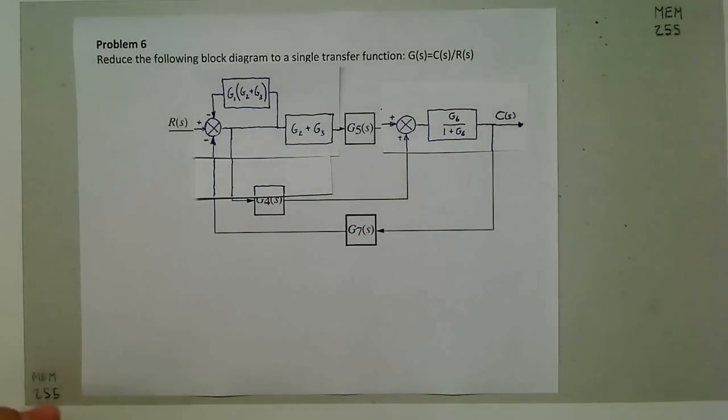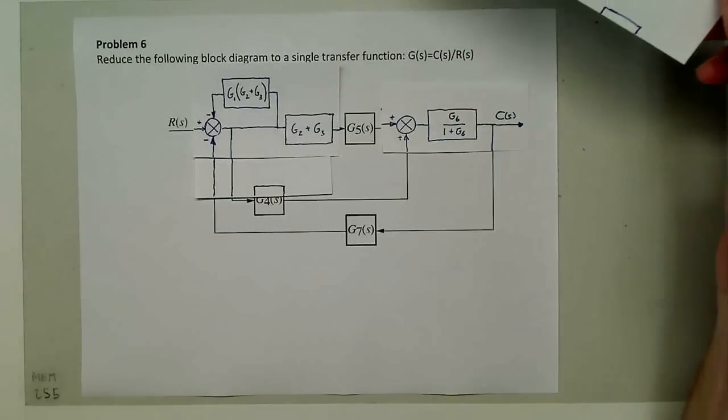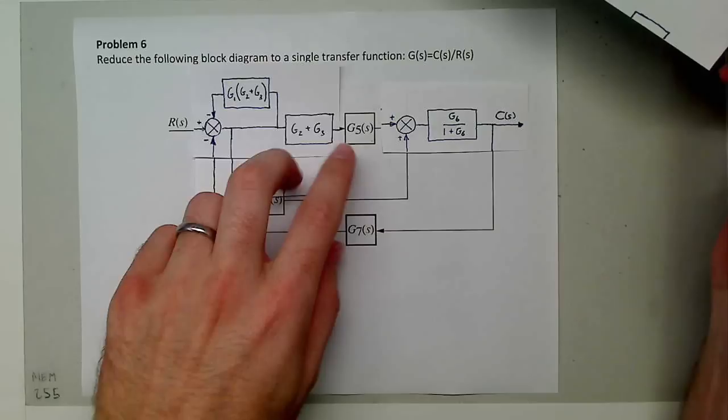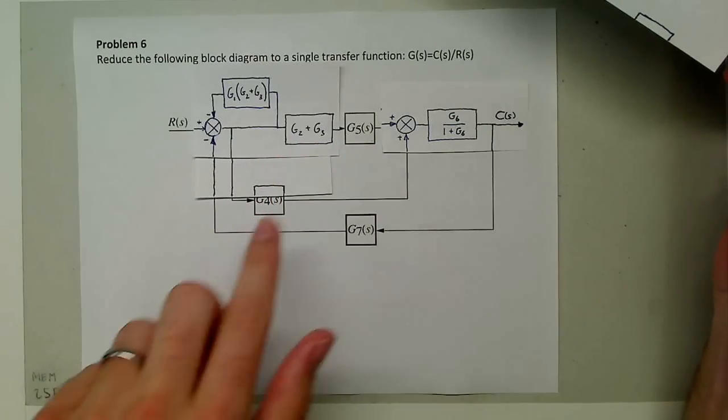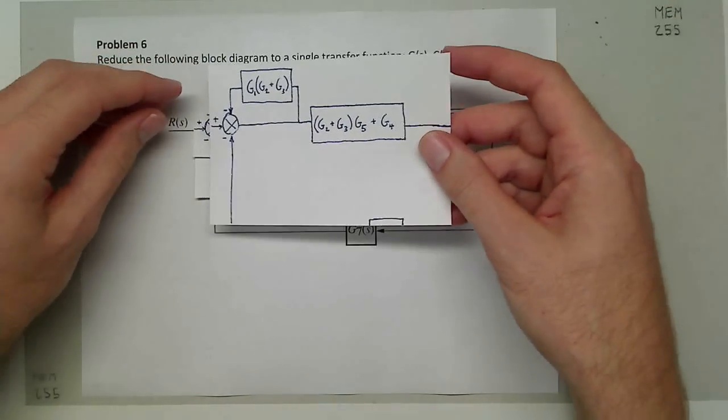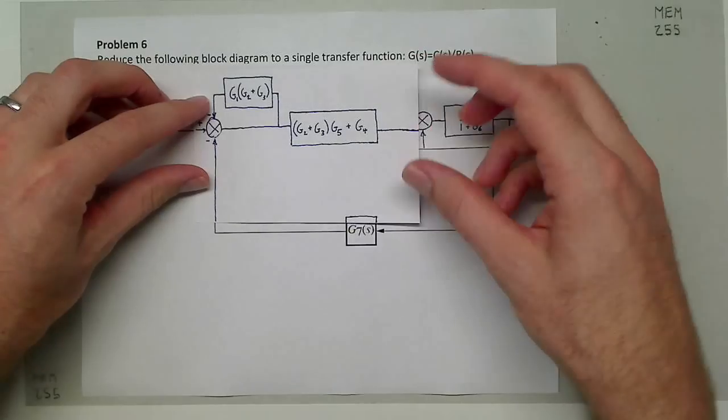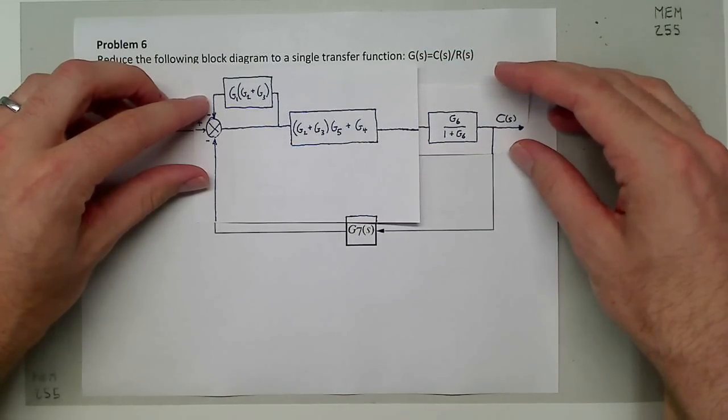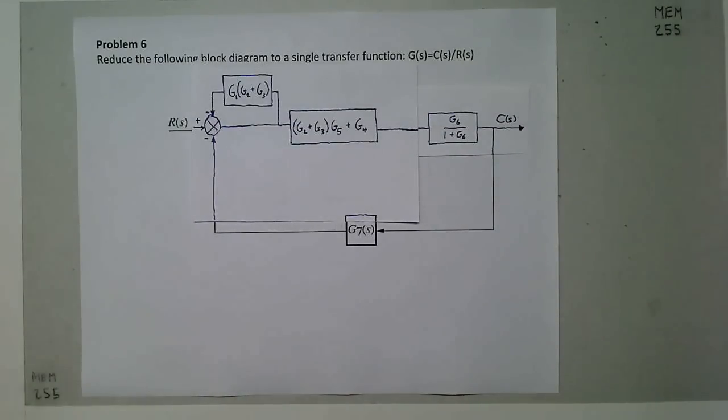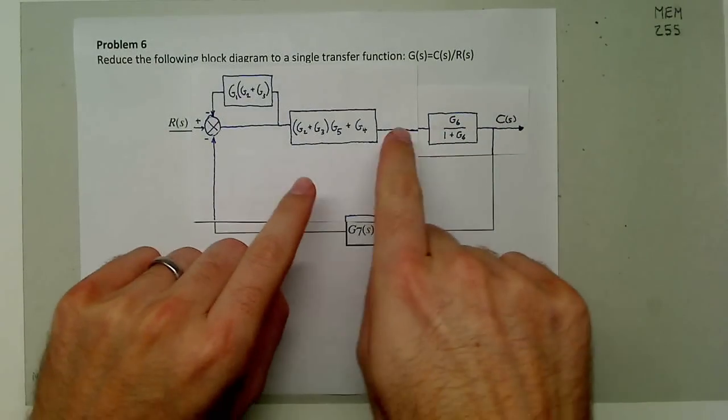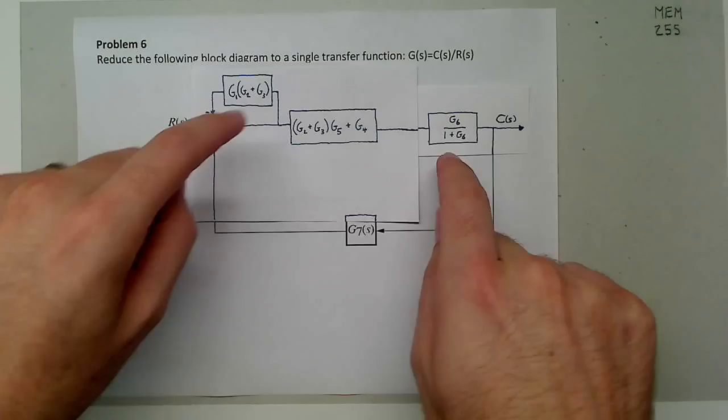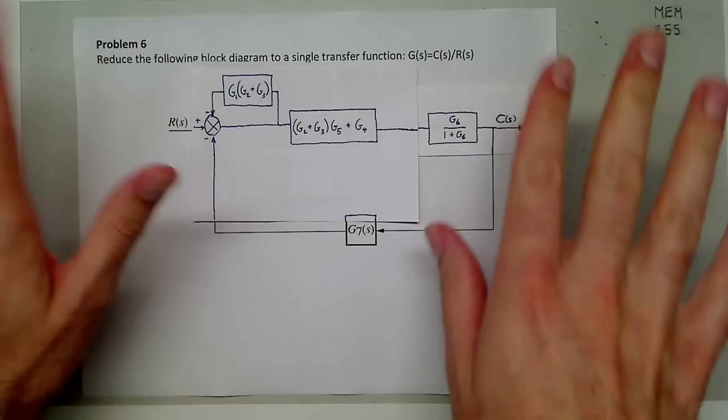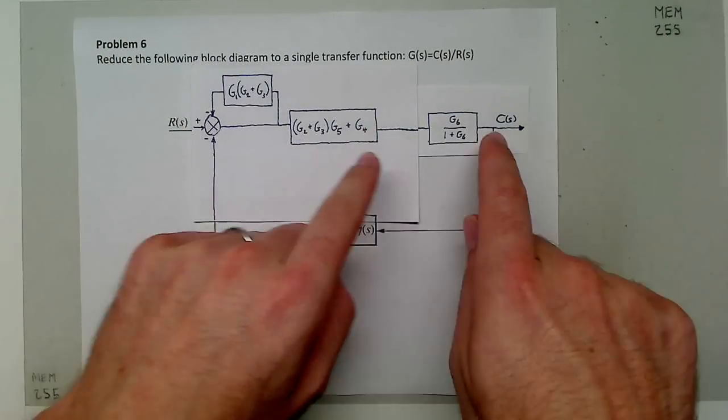We're going to take this forward path and this forward path—they're in parallel with each other—so we're going to multiply these two and then add it to g4. As you can tell, the system looks much simpler now. This summer is gone, and the main summer that had a whole bunch of stuff going into it and the feedback loop is all gone.